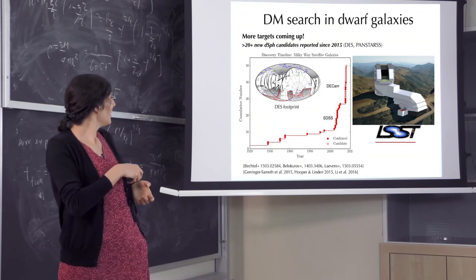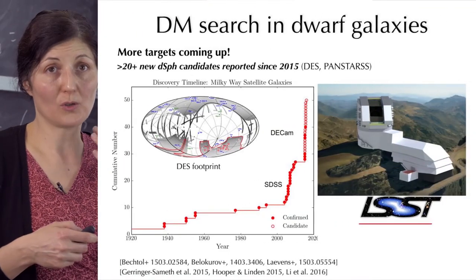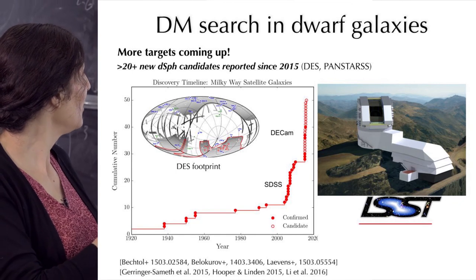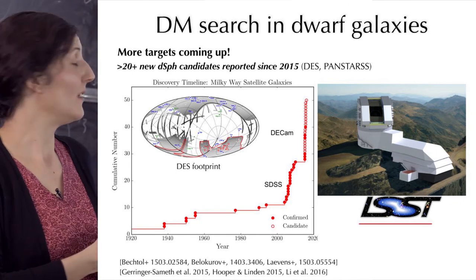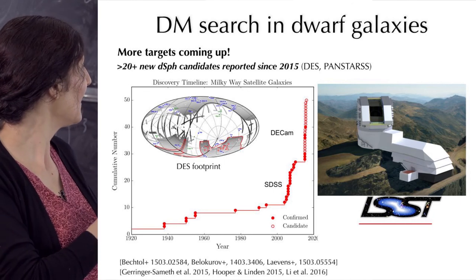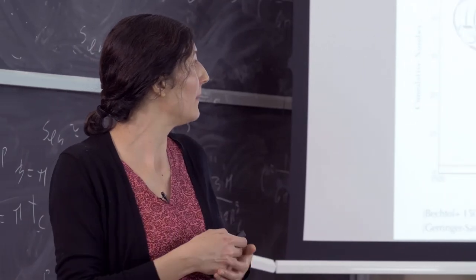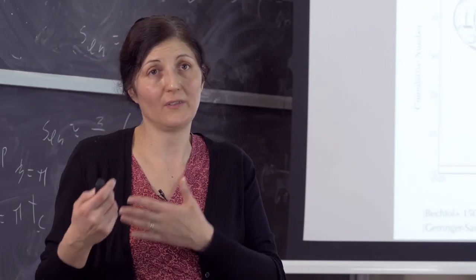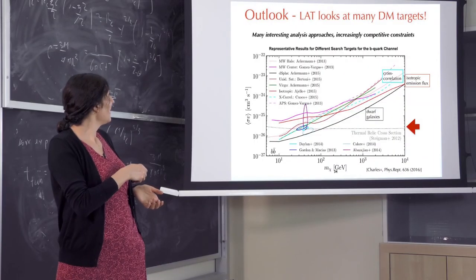There is also exciting development because this last Fermi analysis used only 15 dwarf galaxies, but now we know much more. The Dark Energy Survey experiment detected more dwarf spheroidal galaxies and LSST, which will come online in 2021, will detect many, many more of them.